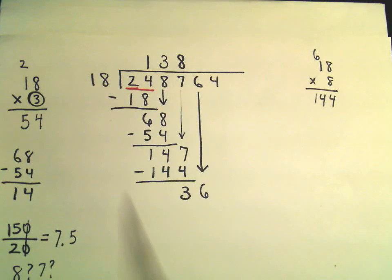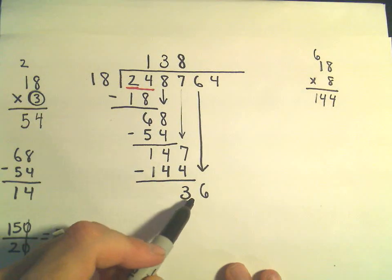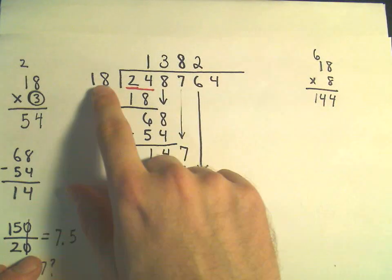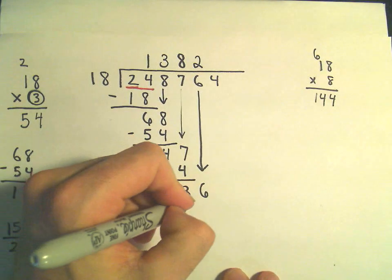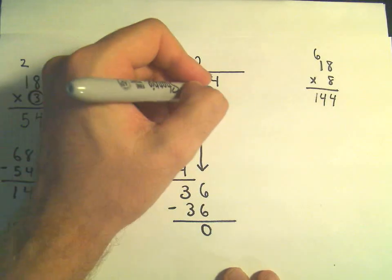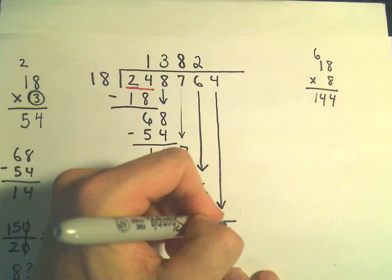Now this is good. Let's see. 18 goes into 36 exactly 2 times. Okay, so 2 times 18 is going to be 36. If we subtract, we'll just get 0. Again, we'll drop our 4 down.